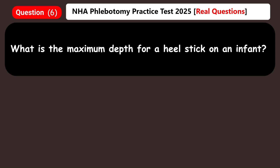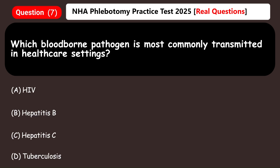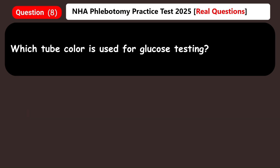What is the maximum depth for a heel stick on an infant? A) 1 mm, B) 1.5 mm, C) 2.0 mm, D) 2.5 mm. Answer: C) 2.0 mm. Which blood-borne pathogen is most commonly transmitted in healthcare settings? A) HIV, B) Hepatitis B, C) Hepatitis C, D) Tuberculosis. Answer: B) Hepatitis B.